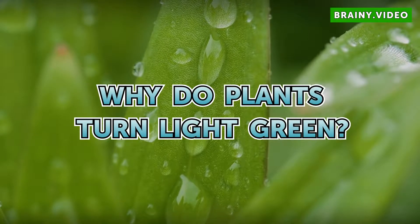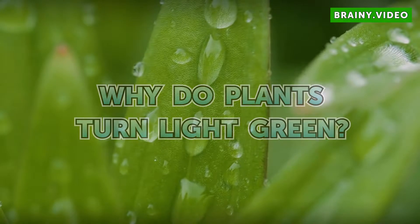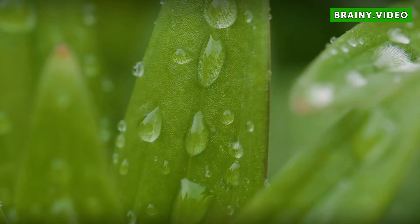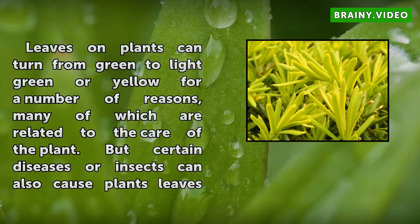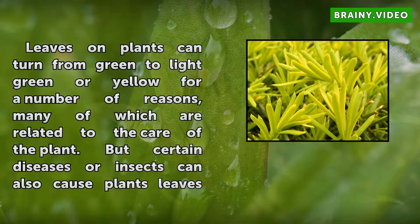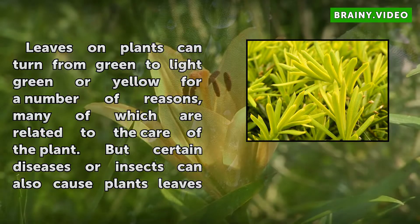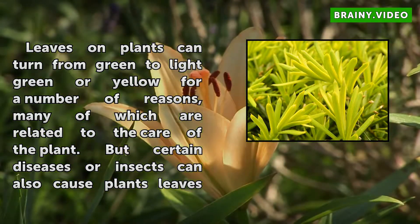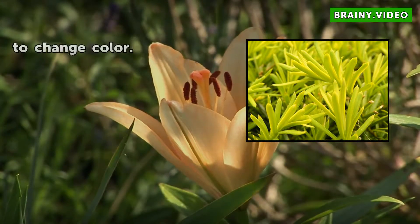Why do plants turn light green? Leaves on plants can turn from green to light green or yellow for a number of reasons, many of which are related to the care of the plant. But certain diseases or insects can also cause plants' leaves to change color.